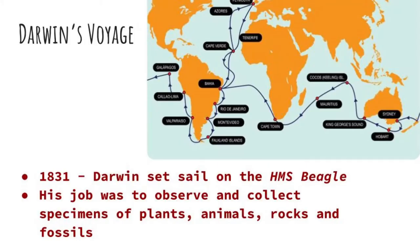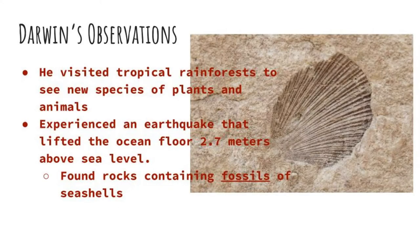In 1831, Darwin joined the HMS Beagle as the ship's naturalist — a naturalist is an expert in natural history. The crew was tasked with a five-year trek around South America to survey the coast and explore the continent. Darwin was able to explore the islands, including the Galapagos. He observed, drew, and collected thousands of specimens for study, visited tropical rainforests, experienced an earthquake that lifted the ocean floor nine feet above sea level, and found rocks containing fossils of seashells on tall mountains. This suggested that the continents and oceans have dramatically changed over time.